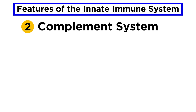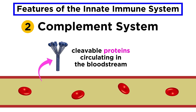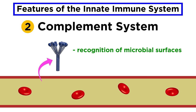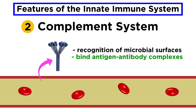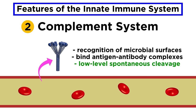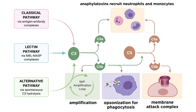If a pathogen is able to slip through physical and chemical barriers, one of the first internal immune defenses it will meet is the complement system. The complement system involves a series of cleavable proteins that circulate through the bloodstream, and is activated when proteins recognize microbial surfaces, bind antigen-antibody complexes, or experience low-level spontaneous cleavage. Activation initiates a chain reaction of proteins cleaving other proteins, with byproducts including recruiting phagocytes, coating pathogens for phagocytosis in a process called opsonization, and even forming pores on microbial surfaces to directly kill pathogens.